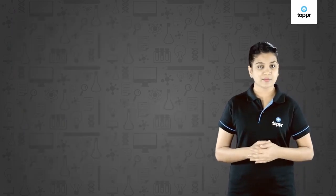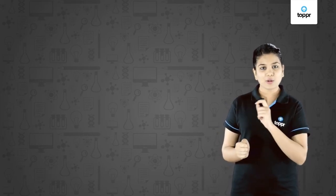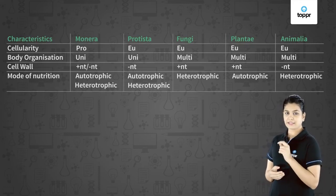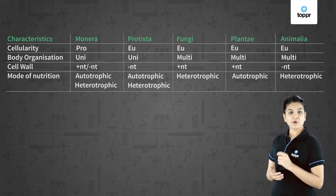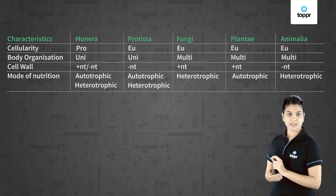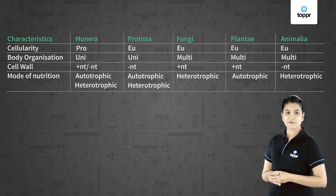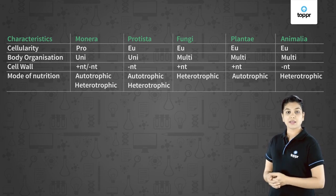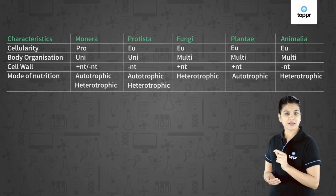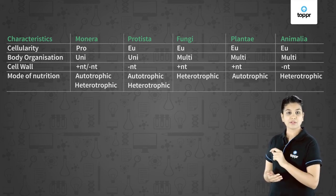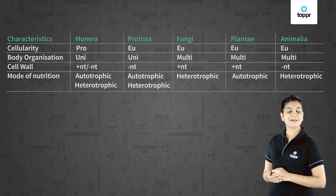Let us quickly summarize the basic characters of all these five kingdoms. If we see the cellularity in these organisms, monerans are the only prokaryotes, rest all the kingdoms are eukaryotes. Second, if we see the body organization, prokaryotes that is bacteria are unicellular. Next, Protista are also unicellular. Then from fungi to animals all the organisms are multicellular.